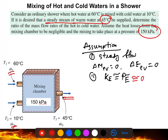According to the question, heat loss from the mixing chamber is negligible, so Q ≈ 0. Additionally, there are no work interactions involved in this process.